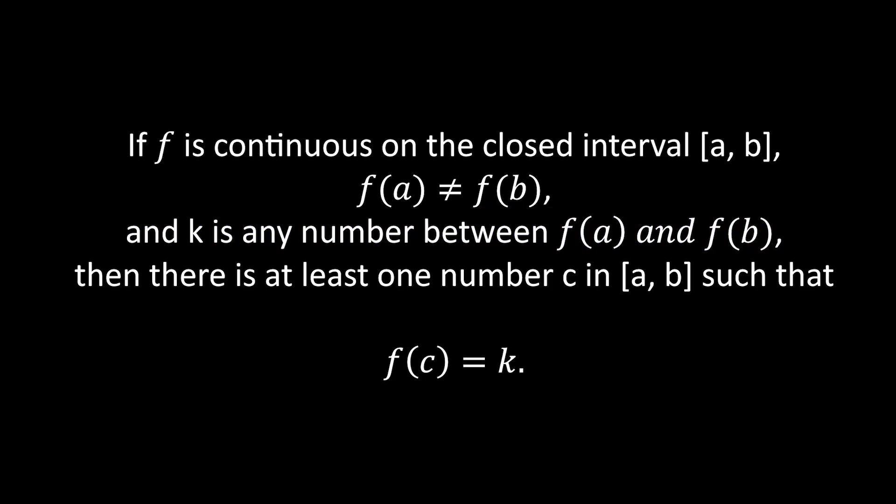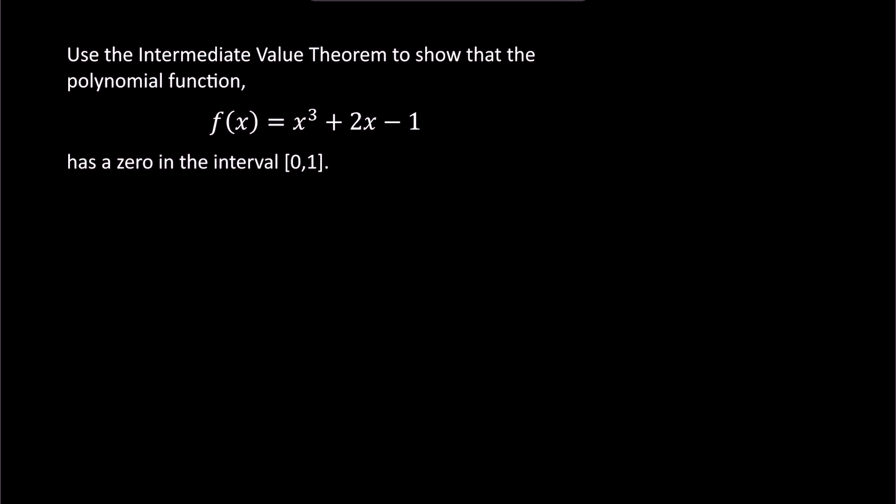Earlier, I mentioned that this theorem can be used to verify the existence of solutions for functions. Let's work through an example. Suppose we have f of x equals x cubed plus 2x minus 1, and we want to use the IVT to prove that there exists a zero between 0 and 1, assuming that f of x is continuous on this interval. When you plug in 0 into f of x, we get f of 0 is 0 plus 2 times 0 minus 1 equals negative 1.